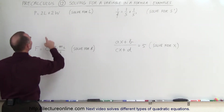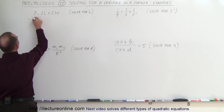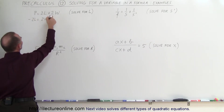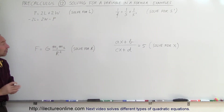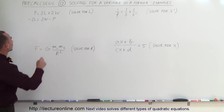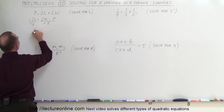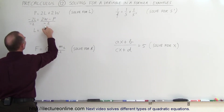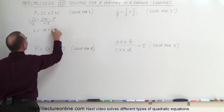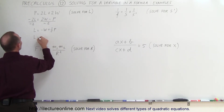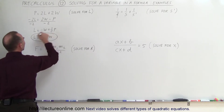We're going to move the 2L term to the left side — when we cross the equal sign, it turns negative — so this becomes minus 2L equals 2W, and when P goes across to the right side it becomes minus P. Then divide both sides by the numerical coefficient of the variable, which is minus 2. So 2 divided by minus 2 is minus W, and minus P divided by minus 2 is plus one-half P. We can write this as L equals one-half P minus W, and that's a good form to leave it in.